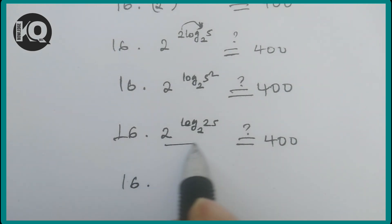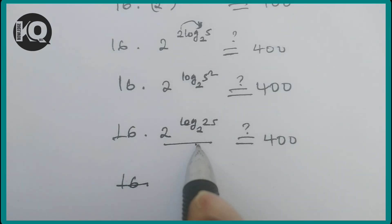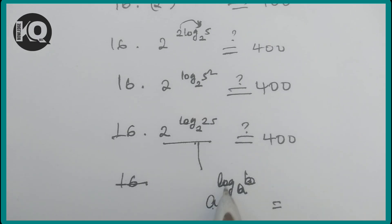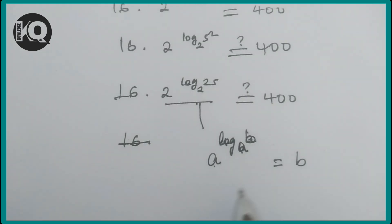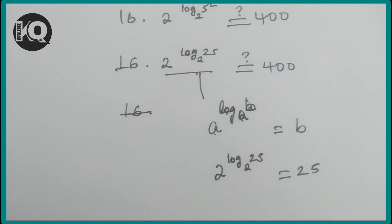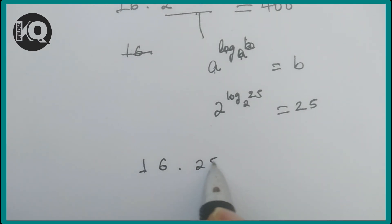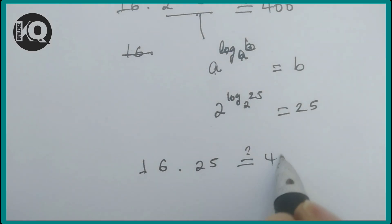Using the identity a^(log_a(b)) = b, we get 2^(log₂(25)) = 25. Therefore 16 × 25 = 400, which confirms 400 = 400. The answer a = 2 + log₂(5) is verified.